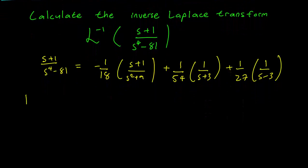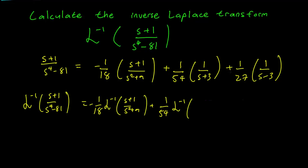Writing down the inverse Laplace transform of the s plus 1 over s^4 minus 81 term is the same as minus 1 over 18 Laplace inverse of s plus 1 over s^2 plus 9 plus 1 over 54 times the Laplace inverse of 1 over s plus 3 plus 1 over 27 times the Laplace inverse.